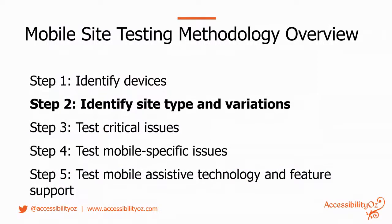The methodology itself has five steps. Step one: identify devices. Step two: identify site type and variations. Step three: test critical issues. Step four: test mobile-specific issues. Step five: test mobile assistive technology and feature support. The reason step two is highlighted is that it's the only difference between the mobile site testing methodology and the native app testing methodology — that step is completely different when it comes to native apps.